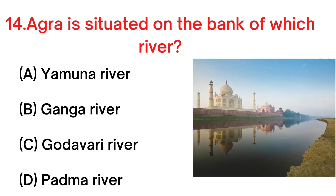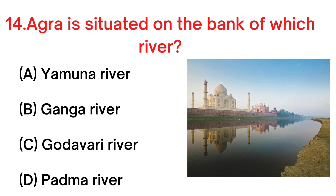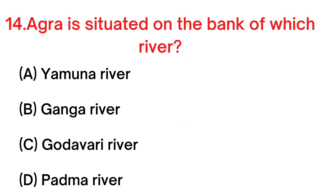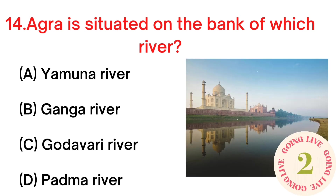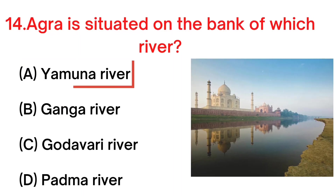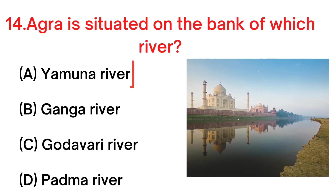Your next question: Agra is situated on the bank of which river? A. Yamuna River, B. Ganga River, C. Godavari River, D. Padma River. Your answer is A. Yamuna River.